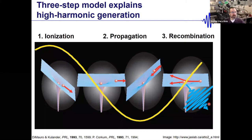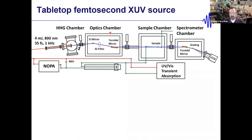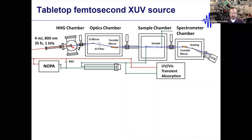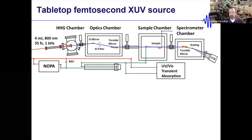The energy the electron picks up surfing the electric field wave is released as an X-ray photon. This same technique is used to make attosecond pulses. Our instrument: we focus infrared light into a long tube called a semi-infinite gas cell, make XUV photons at the end, filter out the residual infrared, focus onto the sample in transmission mode on thin silicon nitride membranes, then disperse onto a diffraction grating and array CCD.